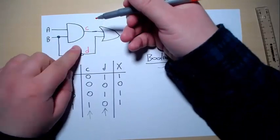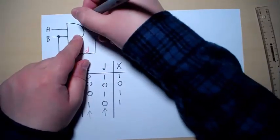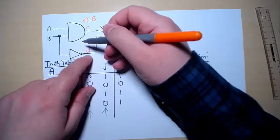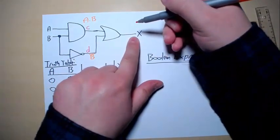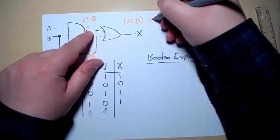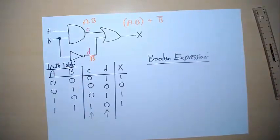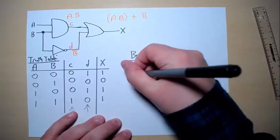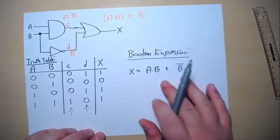Start from the beginning. And for each logic gate that you have, write down its Boolean expression. So here we have an AND. So this is A and B. Here we have an OR gate, but it's the OR of this one, so A and B. We can make it in brackets. Or this one, B not. Therefore, the answer is, or the Boolean expression is, X equals A and B or not B. This is the Boolean expression.